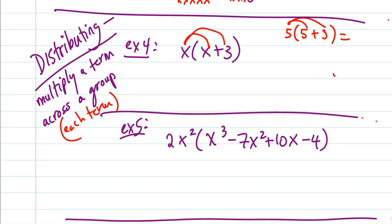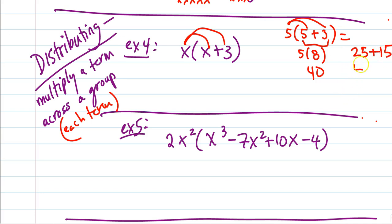Why can we just do that? Let's verify with numbers: 5 times (5 + 3). You could just add 5 and 3 to get 5 times 8, which is 40. But if I distribute, 5 times 5 is 25, plus 5 times 3 is 15 — we end up with the same answer. So when I have to distribute, it's good to know either way I get the same answer.